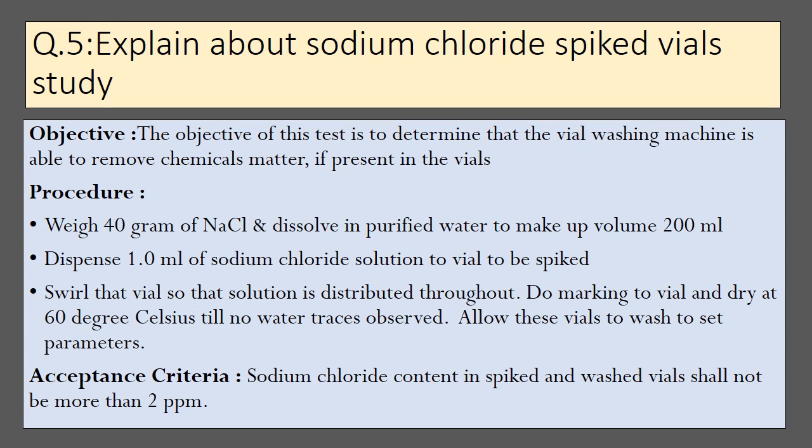The next important question is: explain the sodium chloride spiked vial study performed during vial washing machine qualification. The answer is divided into three parts: objective, procedure, and acceptance criteria. The objective of this test is to determine that the vial washing machine is able to remove chemical matter if present in the vials.